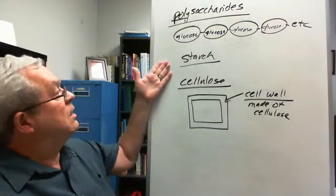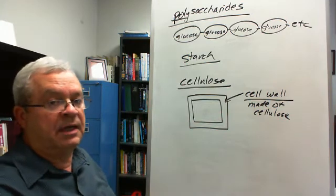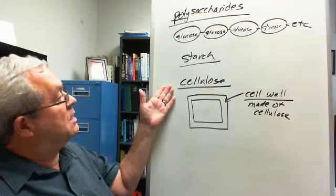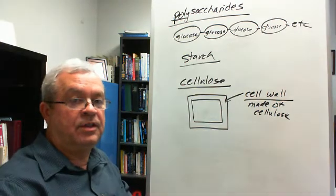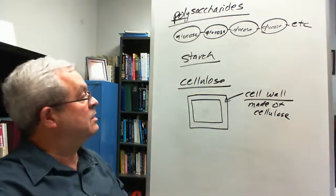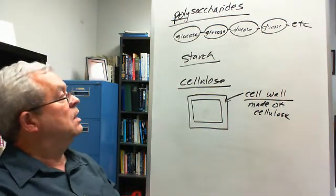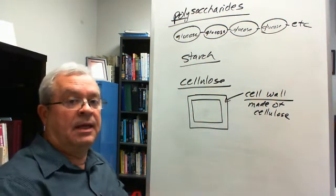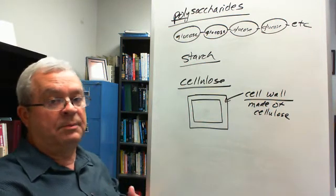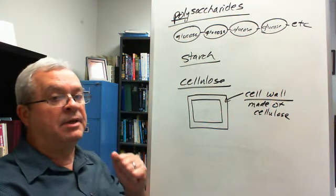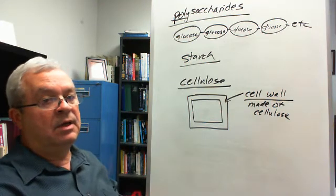Starch comes in lots of things: potatoes and bread and so forth. Cellulose, hopefully you've had some fruit or veggies—that's a good source of cellulose. How does our body handle these as they pass through the pipeline?